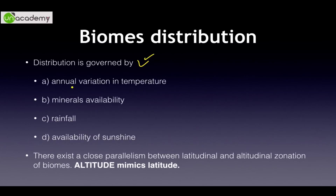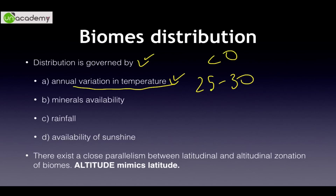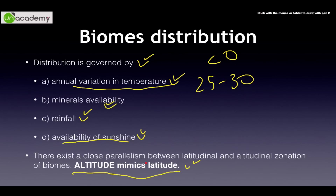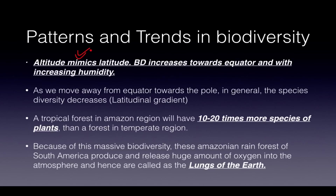Biome distribution is governed by annual temperature variation — 25–30°C gives tropical rainforest, below zero gives cold desert or tundra — as well as mineral availability, rainfall, and sunshine. A key rule of thumb: altitude will mimic latitude. As you go away from the equator, species decrease. Similarly, as you go above mean sea level, species decrease.